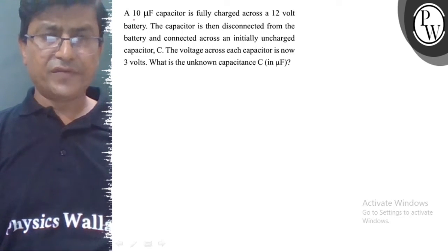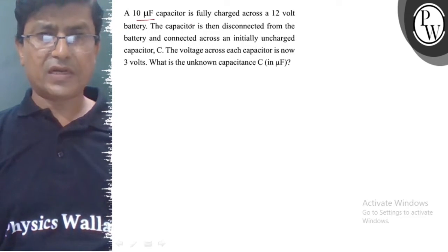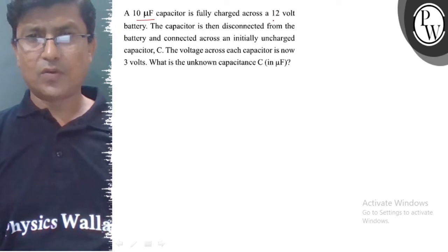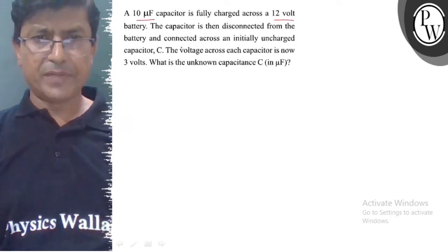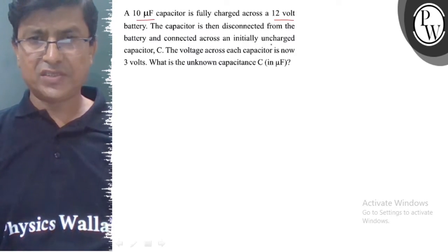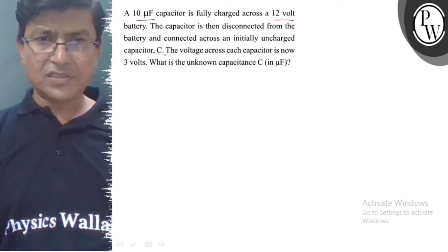Hello, let's understand the question. A 10µF capacitor is fully charged across a 12V battery. The capacitor is then disconnected from the battery and connected across an initially uncharged capacitor C.